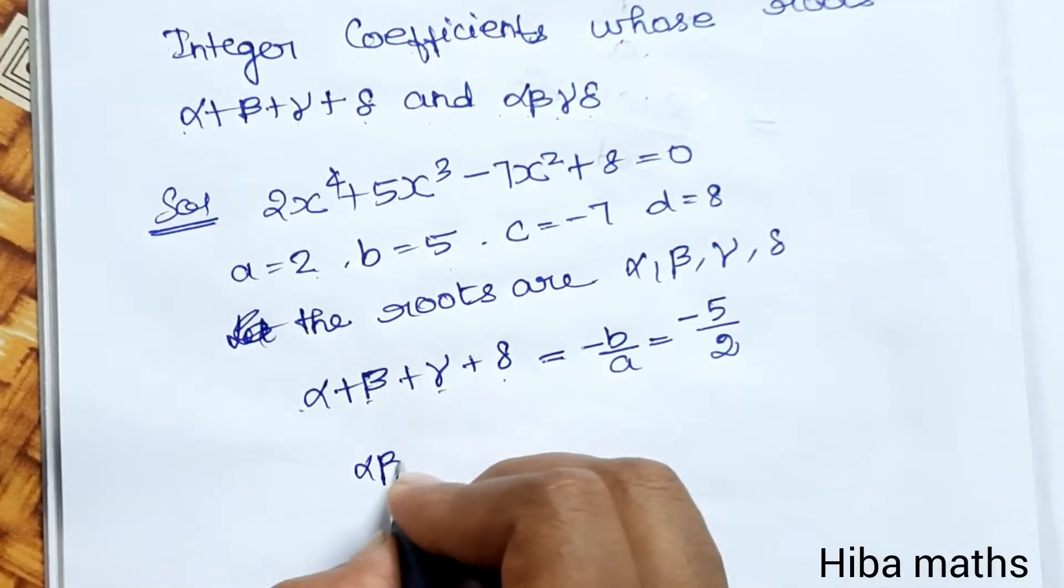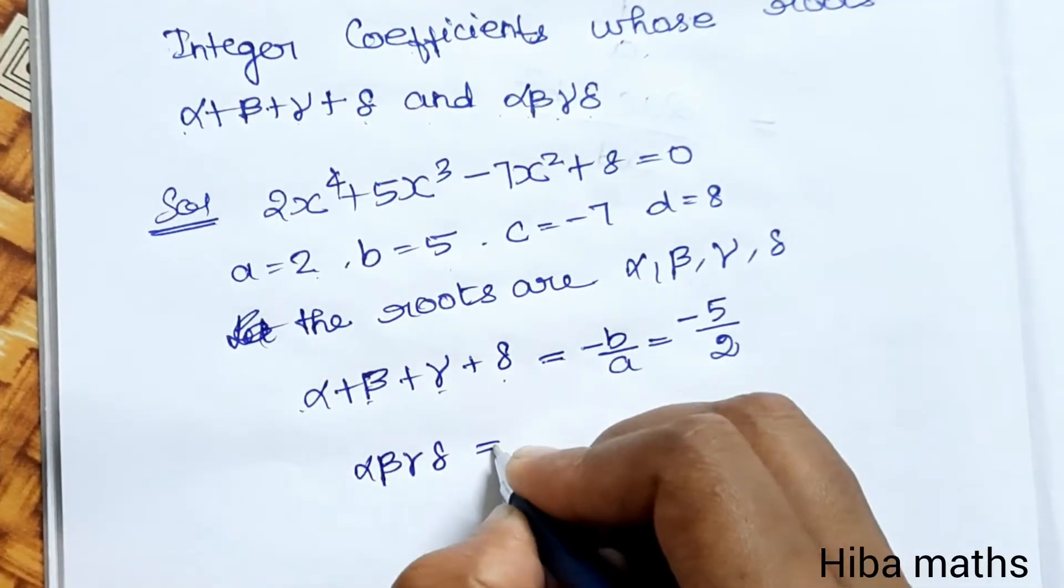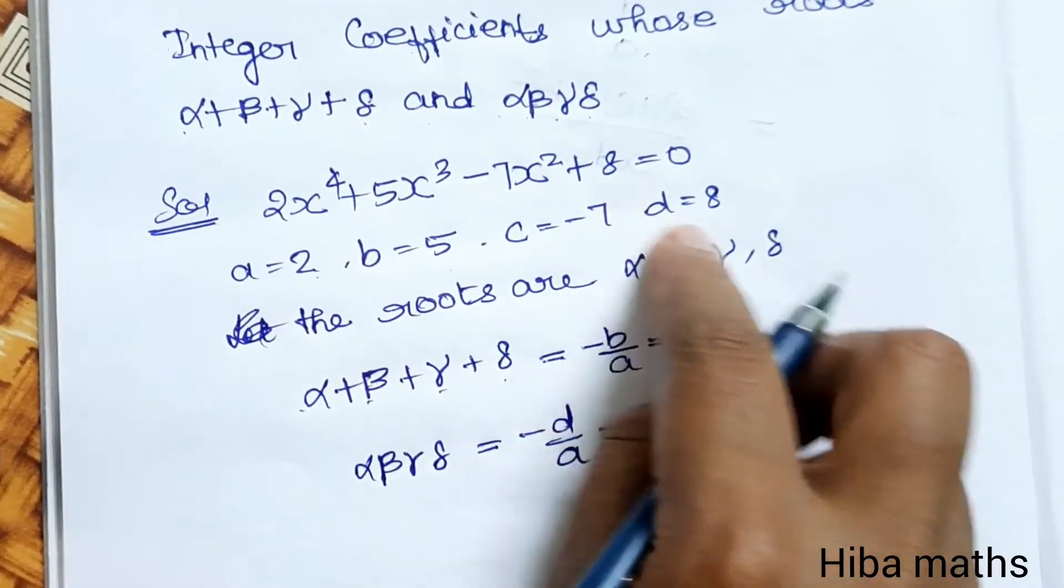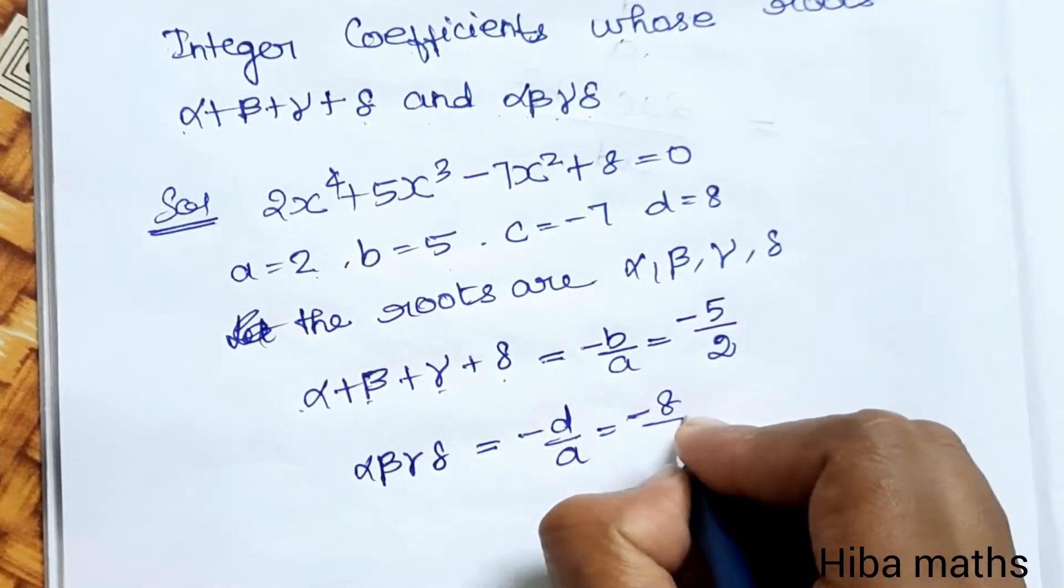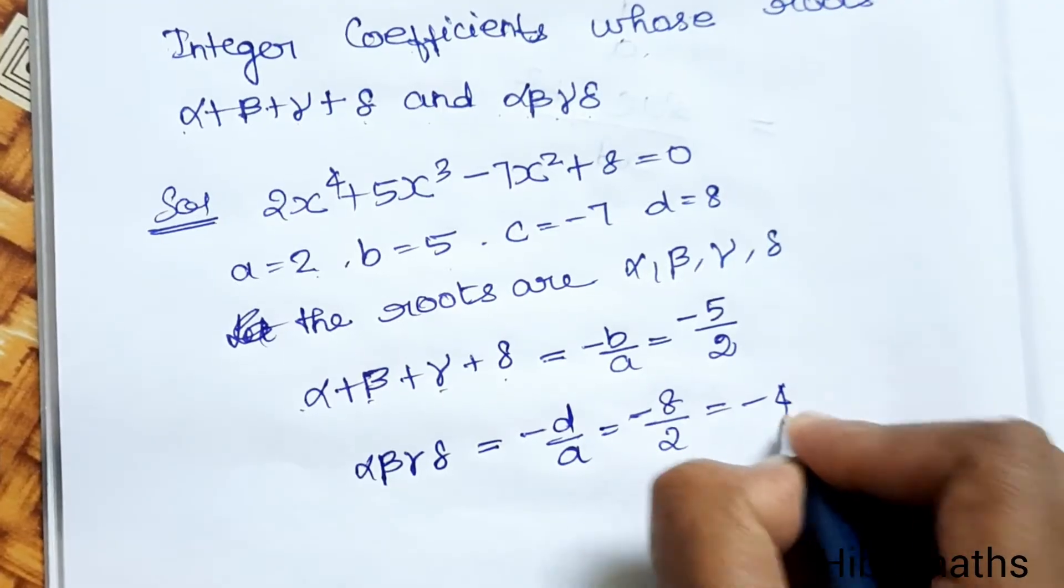Product of the roots: -d/a, d value is 8, so -8/2 which equals -4.